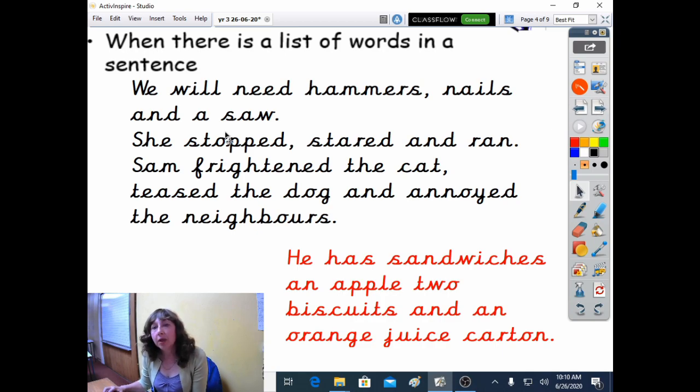Now one of the ways that we use commas is when we are writing a list in a sentence. So in this sentence, we've got a comma, it's just here, and the sentence says, we will need hammers, nails, and a saw.